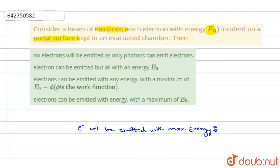So it will be liberated, it will be emitted with the maximum energy E0 because of the elastic collision between the molecules. So because of elastic collisions, you will be having the electrons emitted with the maximum energy.